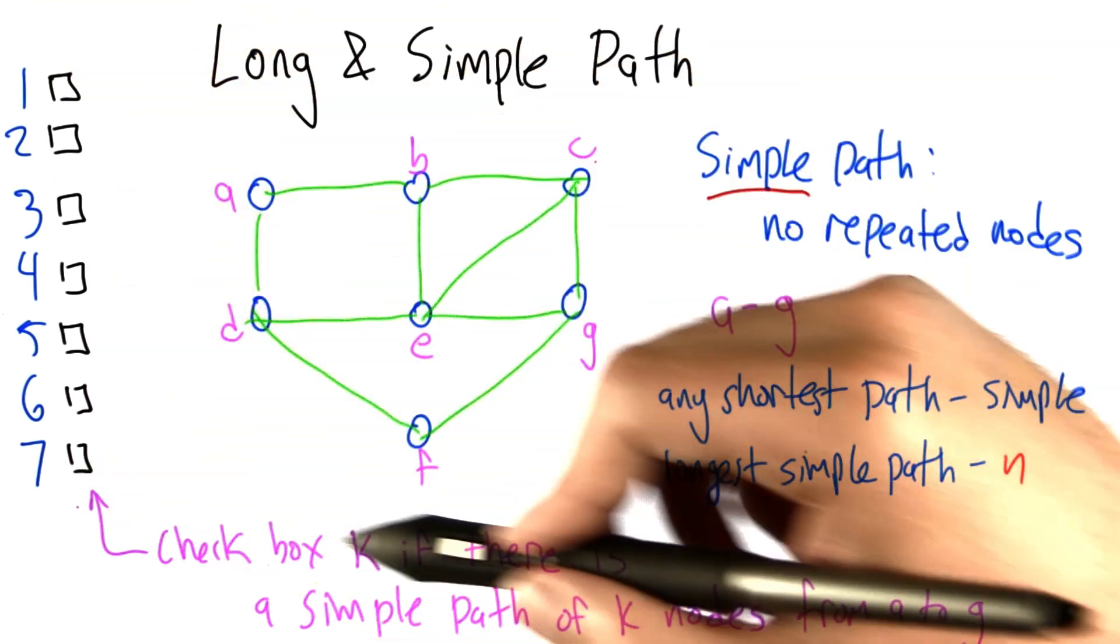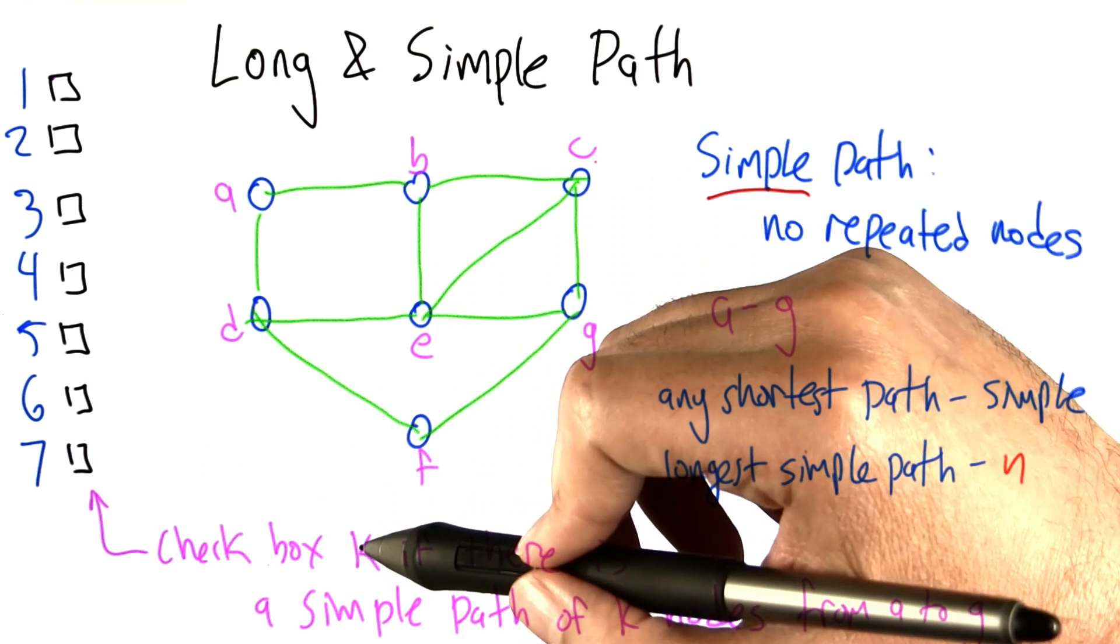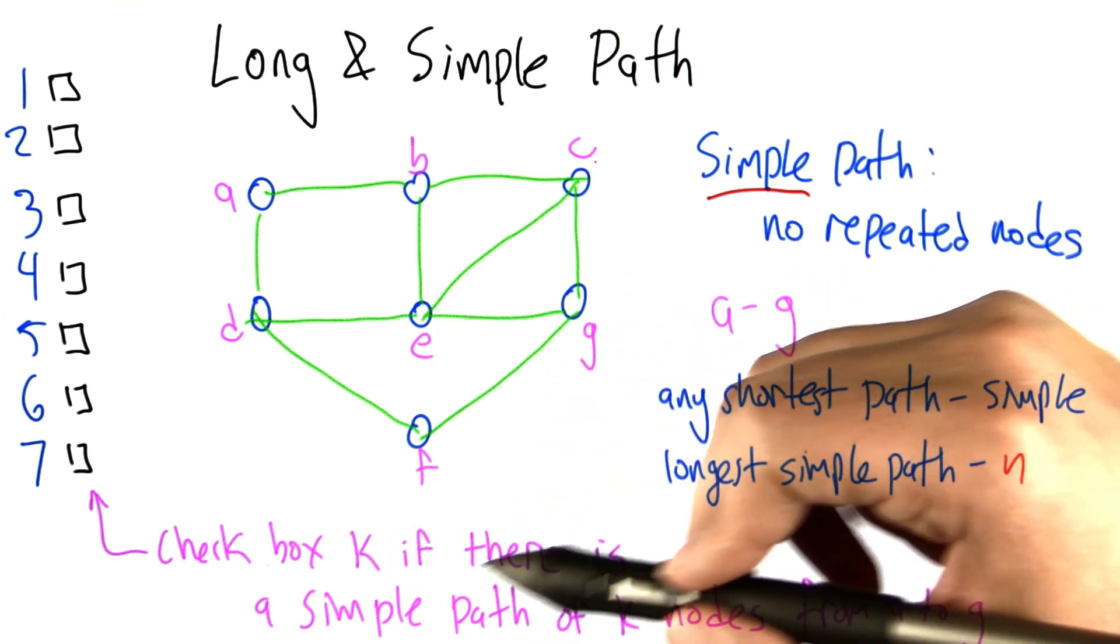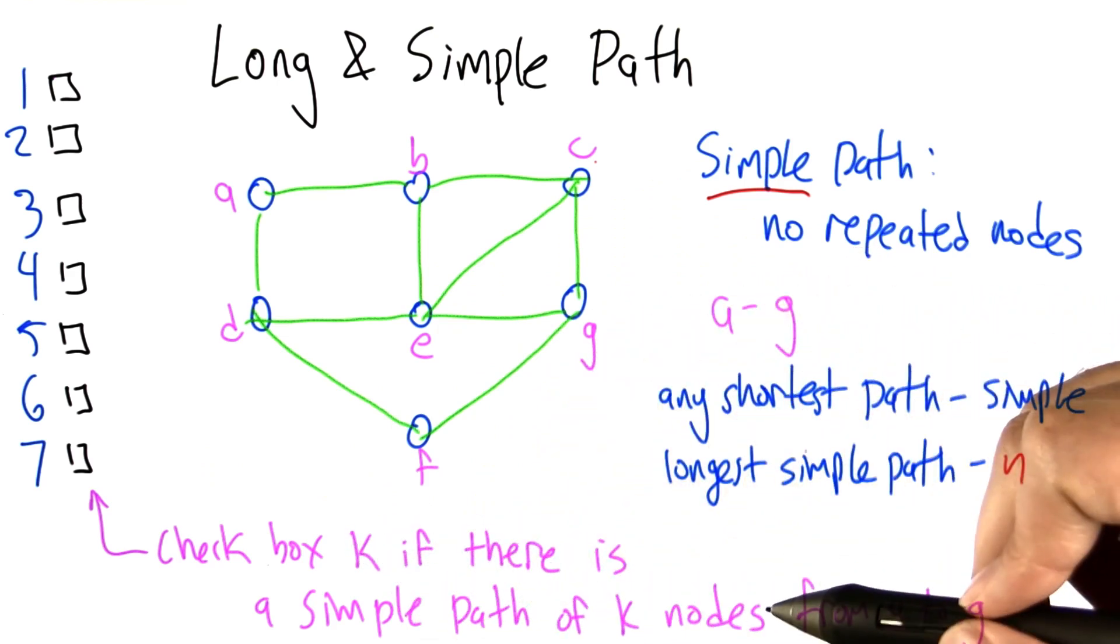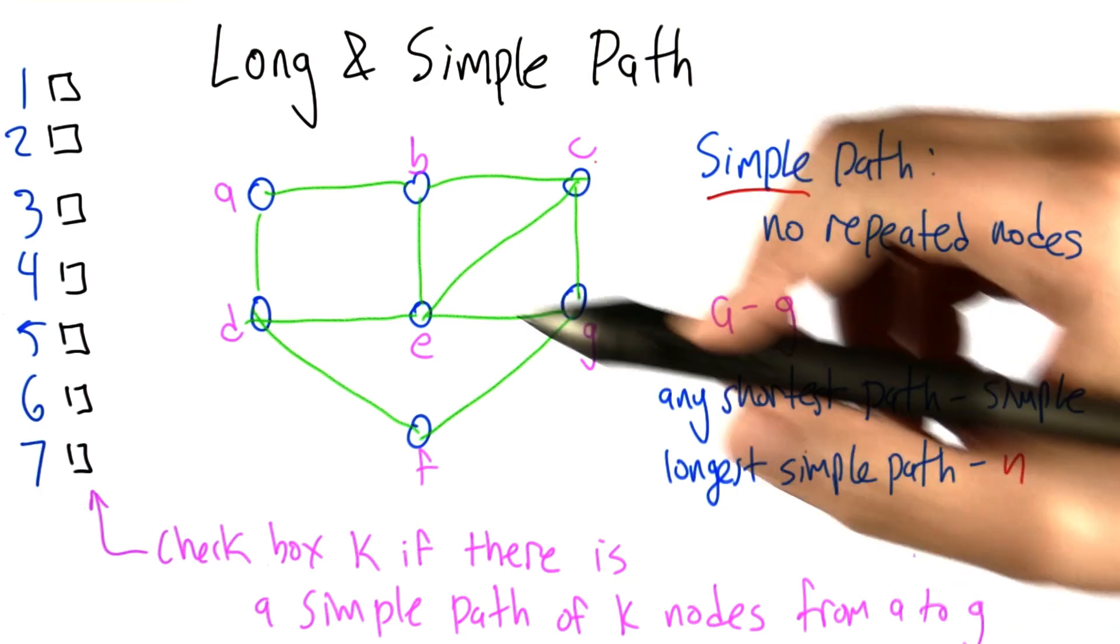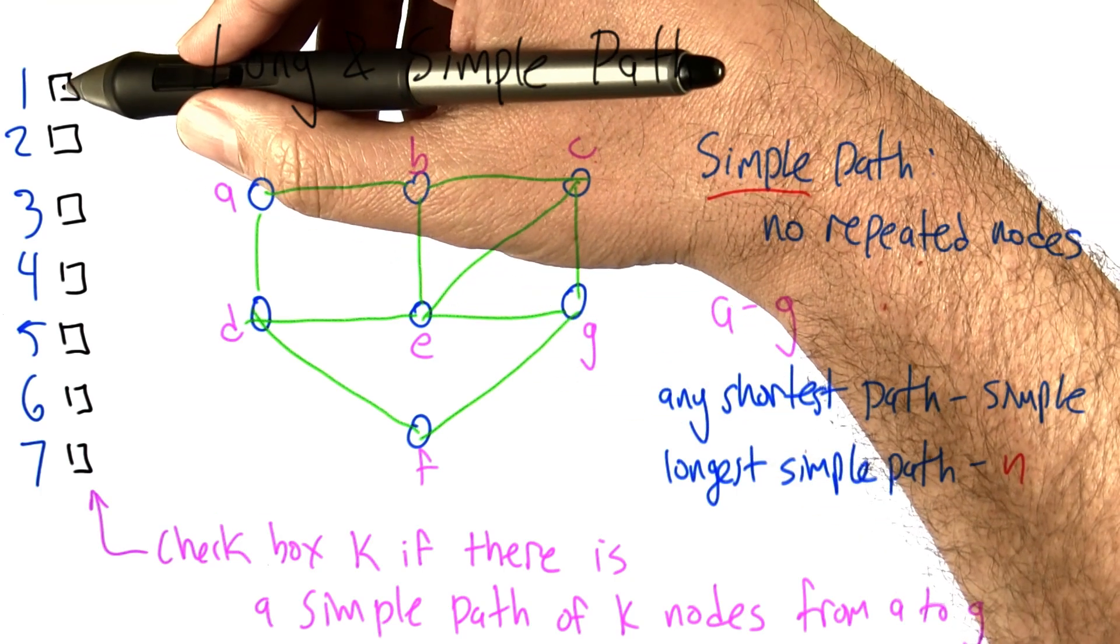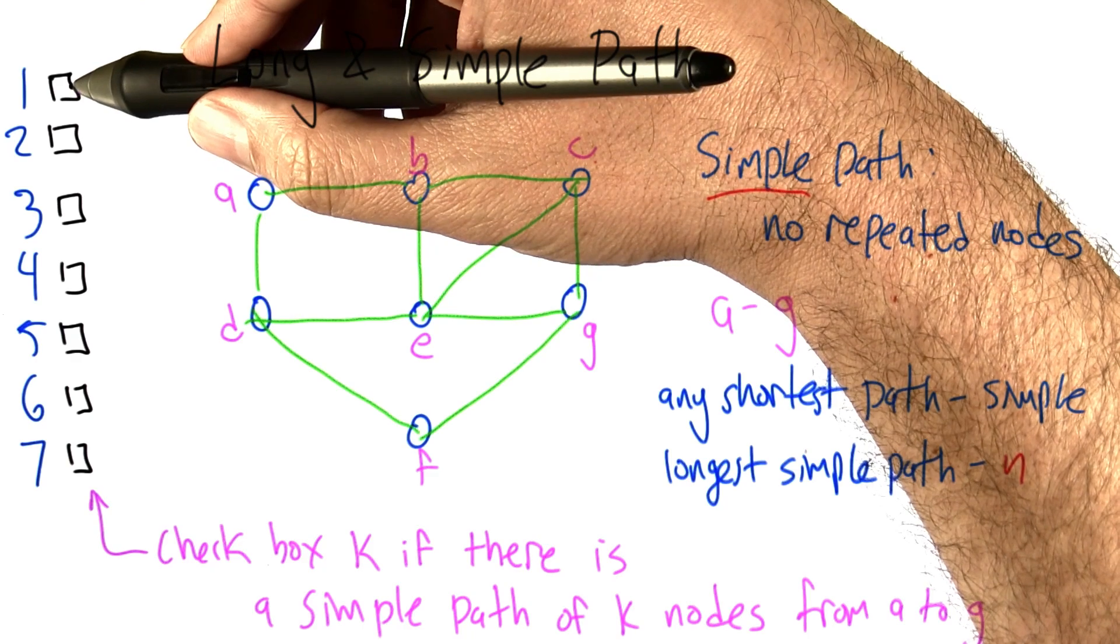I want you to check the boxes, each box with number k next to it, if there is a simple path of k nodes that goes from A to G. So, for example, it can't be 1 because it has to have at least A and G on it.